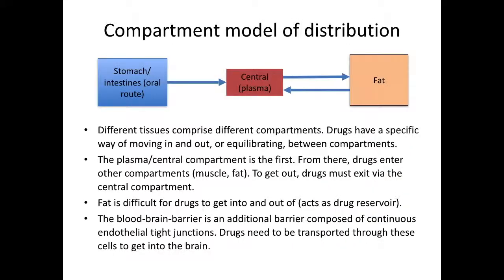The body is composed of many different types of tissues, and these tissues are called compartments, each with different absorbances and absorbance orders. After injection, all drugs will enter the plasma compartment first and be circulated around the body. The plasma compartment is often referred to as the central compartment. From there, drugs will enter different compartments, such as muscle and fat. Once drugs get into the muscle or fat compartments, they must exit back out into the plasma compartment before they are metabolized and eliminated.